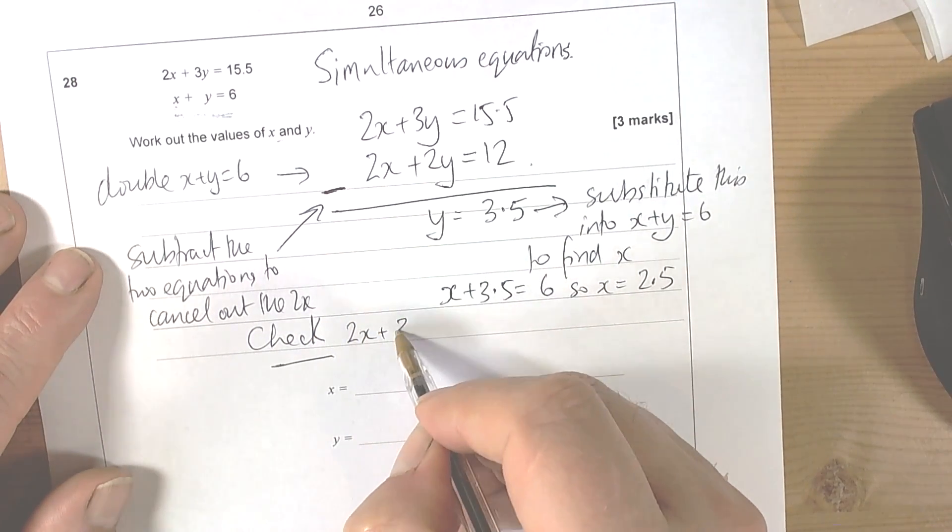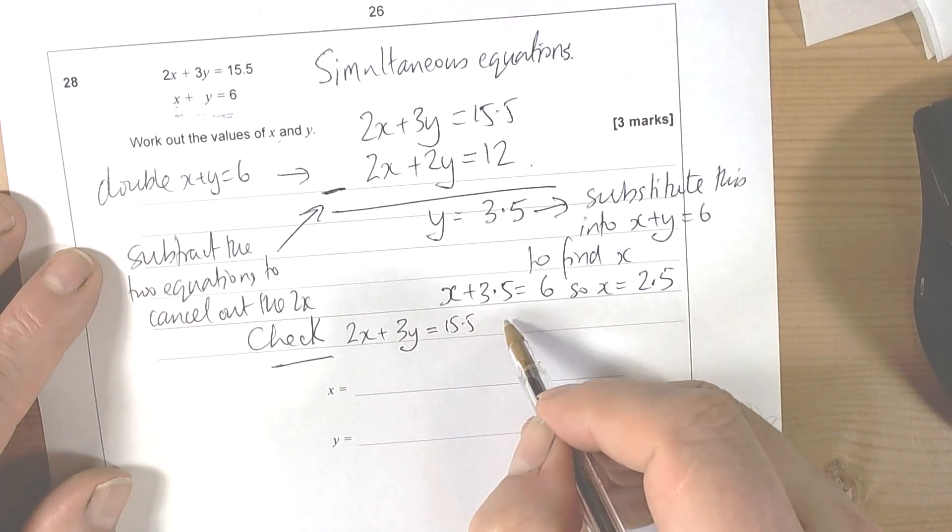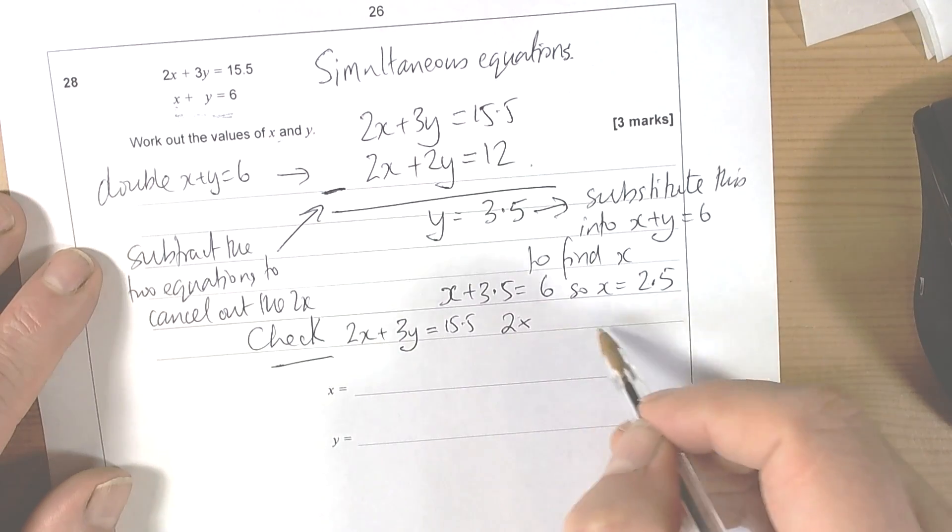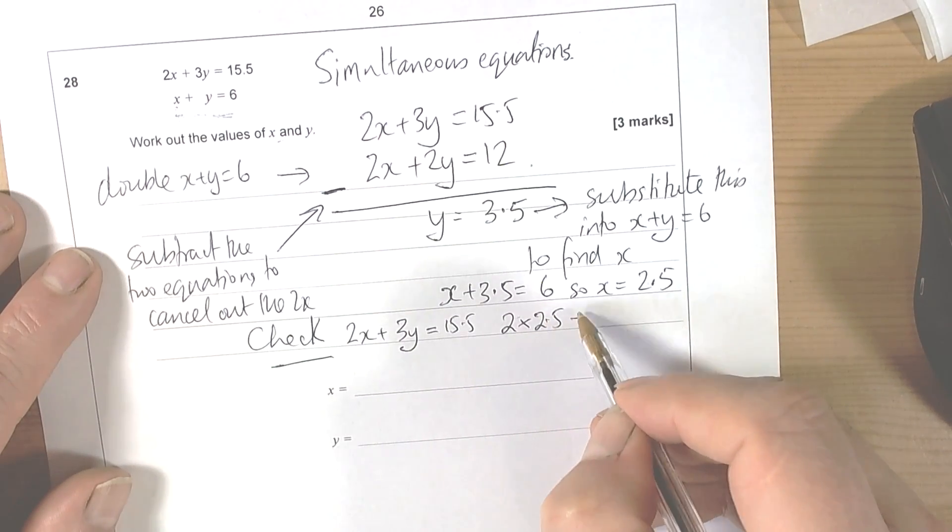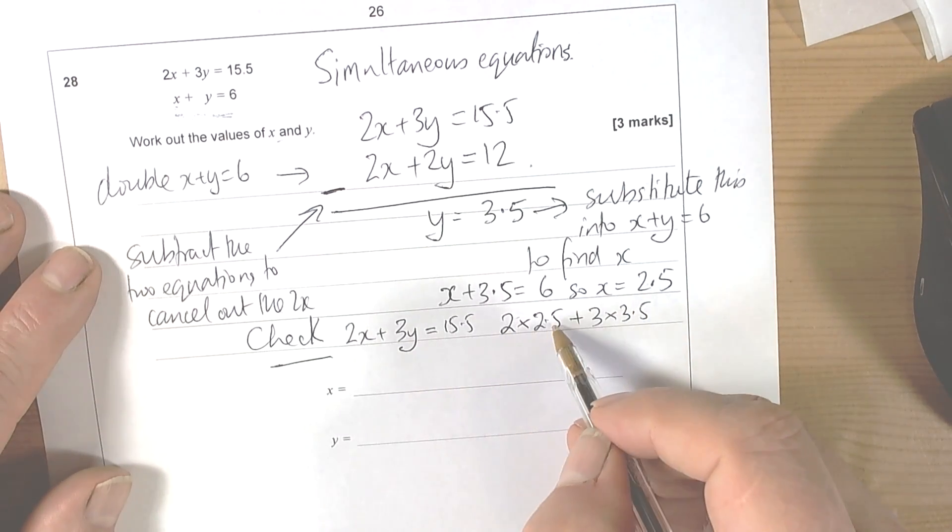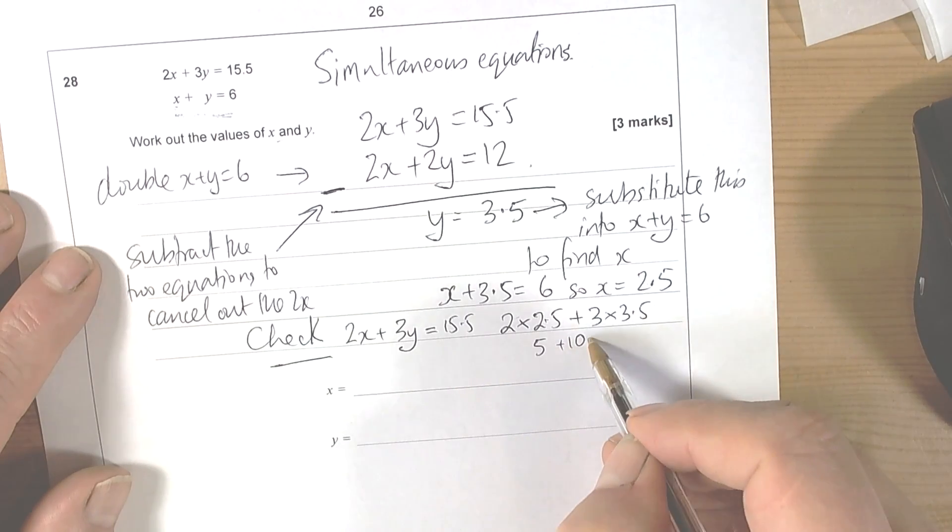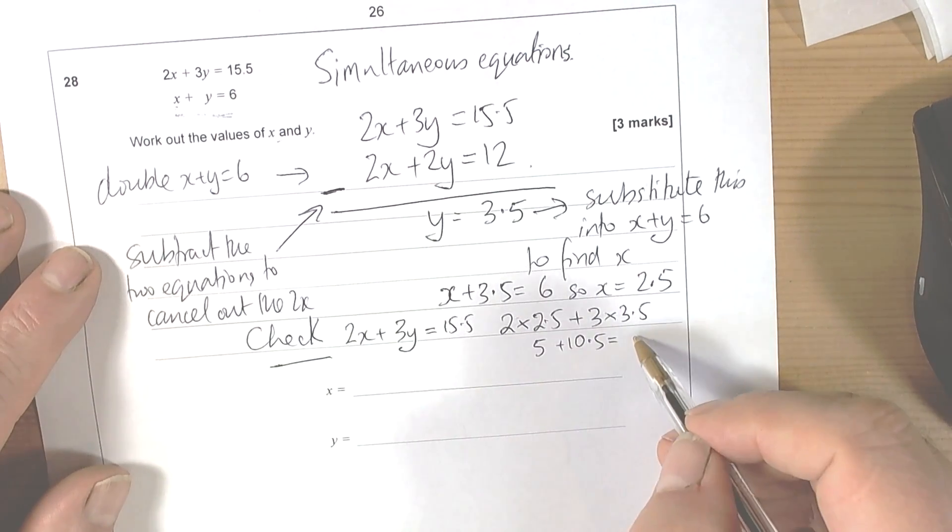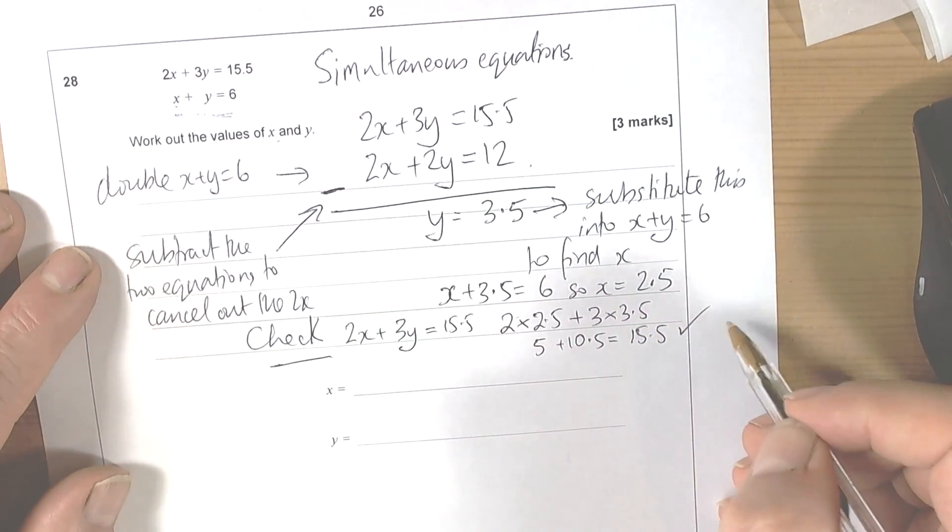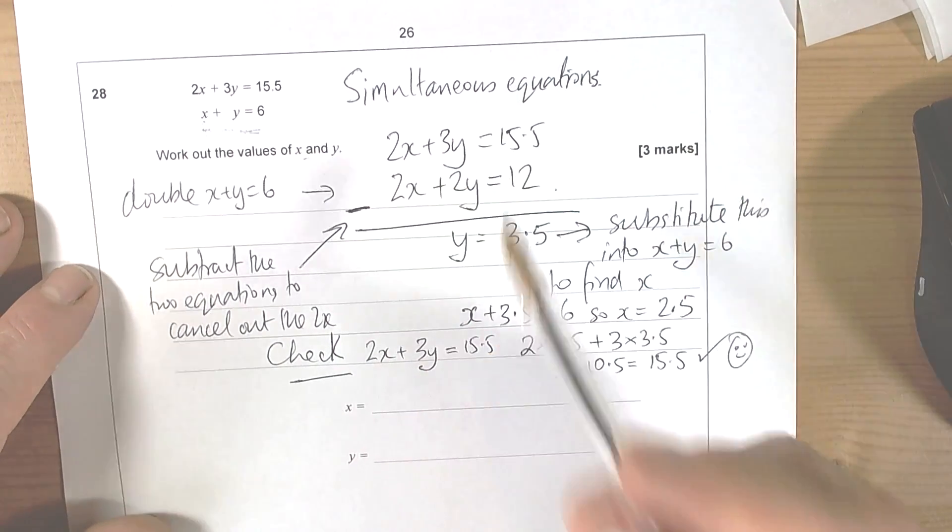That 2x plus 3y equals 15.5. So we do 2 times the x value, which was 2 and a half, plus 3 times the y value, which was 3 and a half. 2 times 2 and a half is 5, 3 times 3 and a half is 10 and a half. 10 and a half plus 5 is 15 and a half, and that's what we wanted, so the check worked.